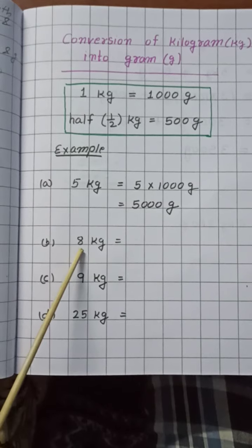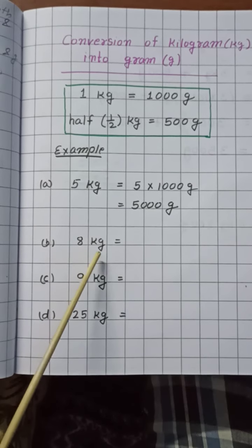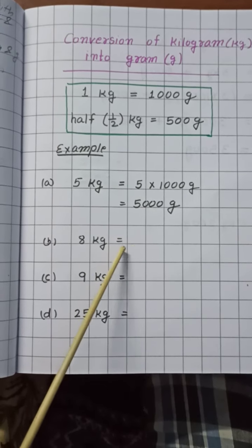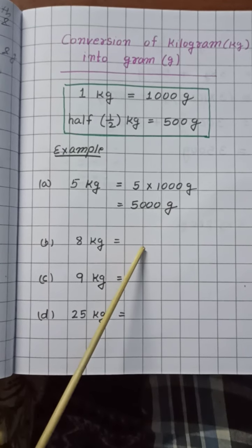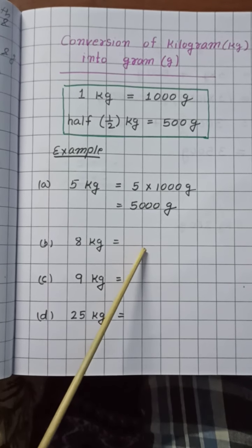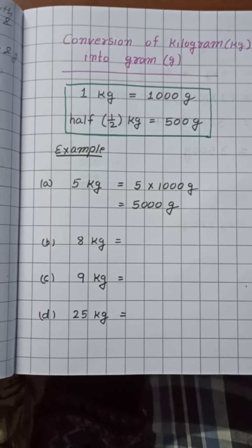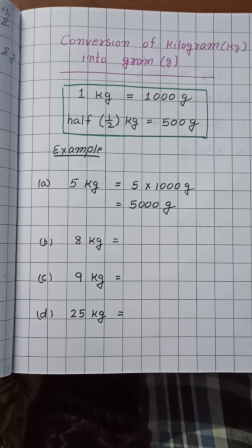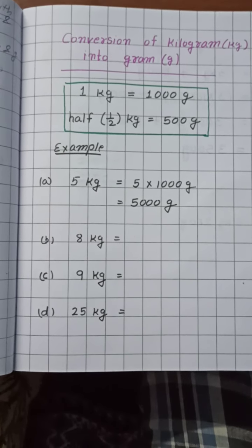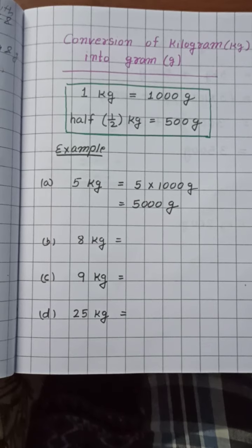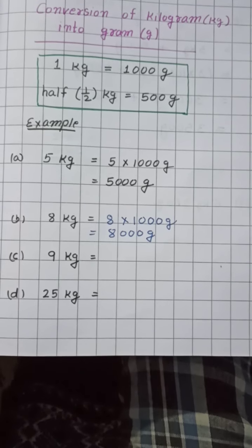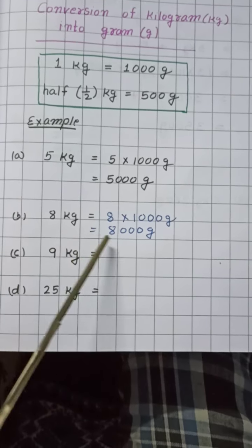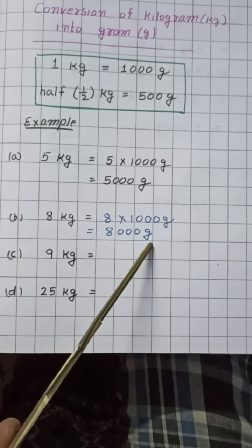Let's see one more example. Here is 8 kilogram. So children, what do we do? To convert into gram, we multiply by 1000. So we write here 8 multiply by 1000. So 8 kilogram is equal to 8000 gram.